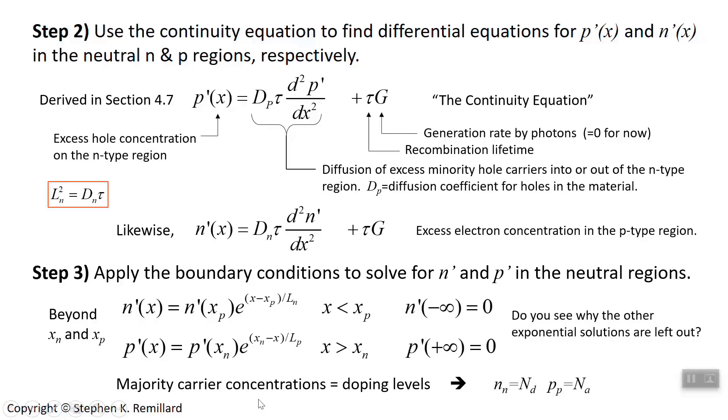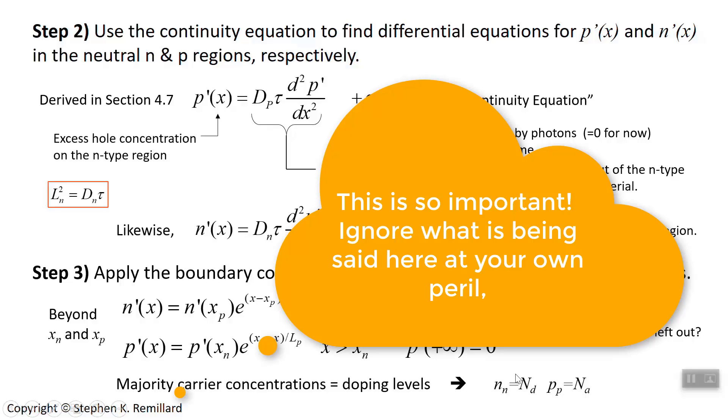you also know the majority carrier concentrations. Those are actually kind of trivial. They are simply the doping levels, assuming 100% ionization. And as we went through before, the excess majority carrier concentration is negligible compared to the majority concentration that's already there. So we just say that on the n side, the majority carriers are electrons and their concentration is the doping level.